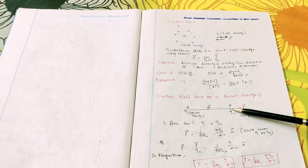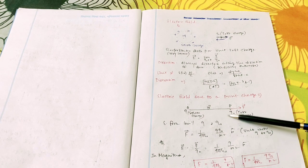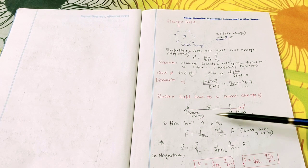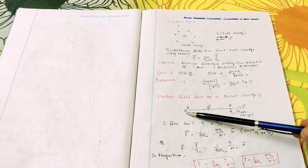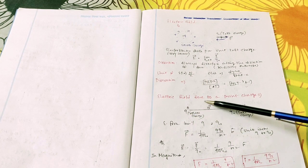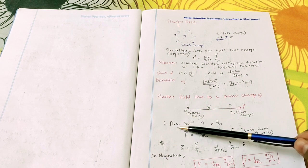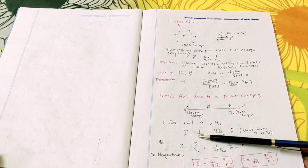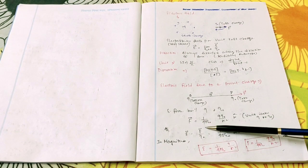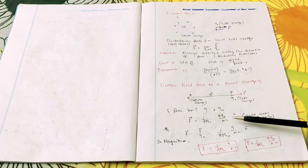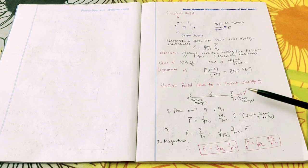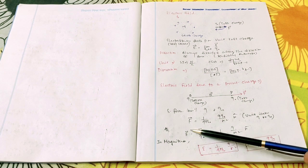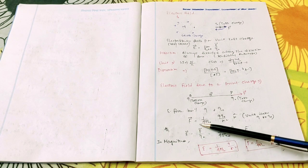We consider a test charge plus Q naught at point P. The separation between Q and Q naught is R. Since both charges are positive, the nature is repulsive, and there will be an electrostatic force. This expression will be one over four pi epsilon naught times Q Q naught divided by R squared, with the unit vector directed radially outward.